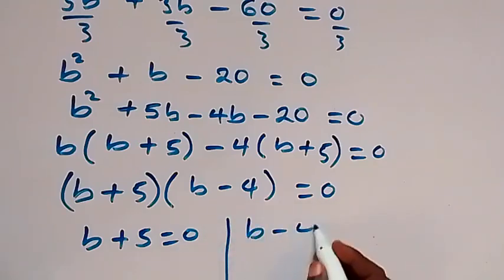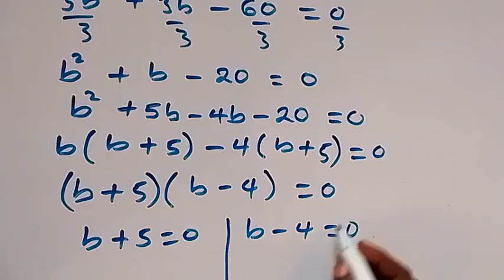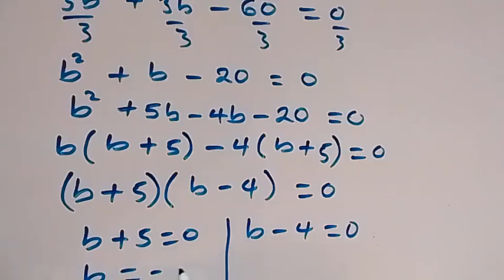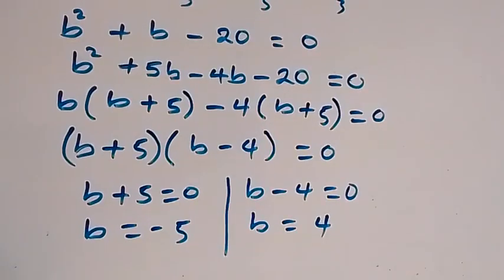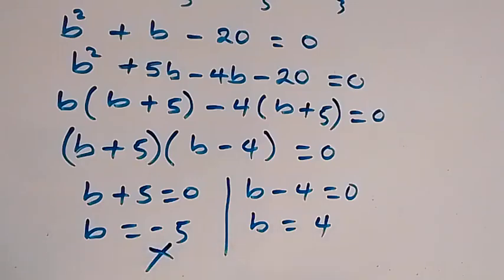The two possible cases are b + 5 = 0 or b - 4 = 0, giving b = -5 or b = 4. Since a and b are members of the natural numbers, b = -5 is not possible in this case.